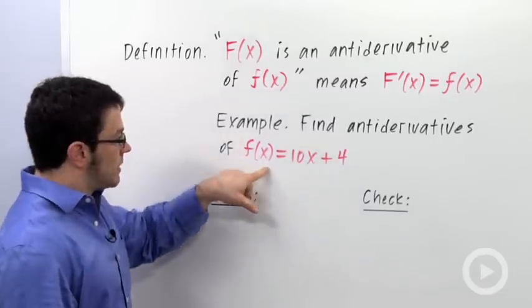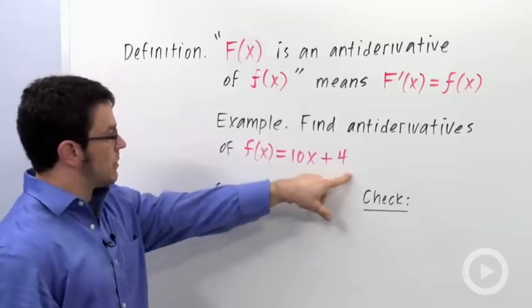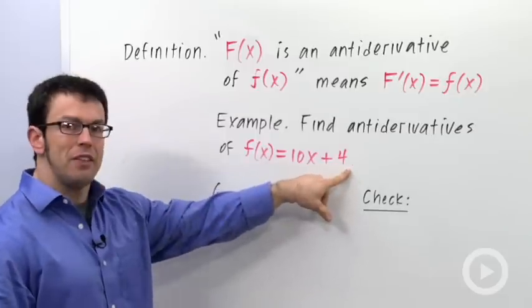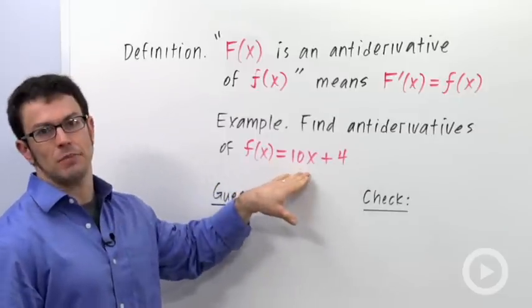That's one method for doing it. So finding antiderivatives of this function, for example, little f of x equals 10x plus 4, you'd have to think of a function whose derivative was 10x plus 4.